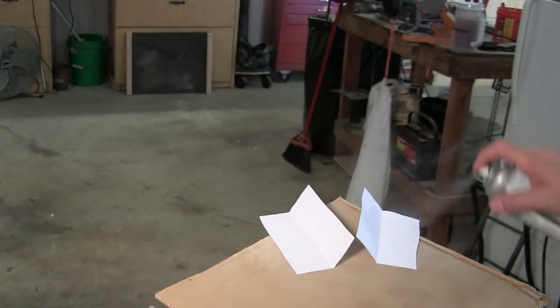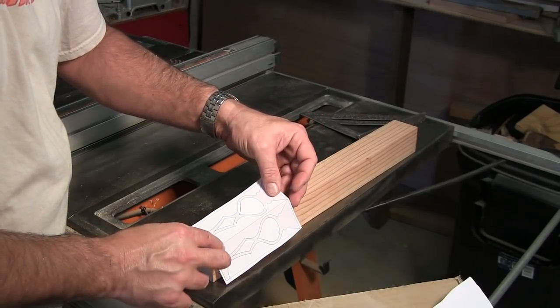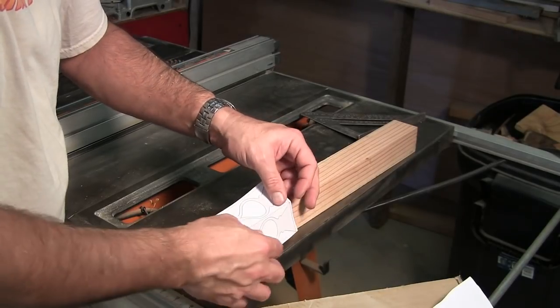Now that the patterns are creased, we'll apply some spray adhesive. Now I'm going to apply these patterns, keeping that 90 right on the straight edge of the wood.